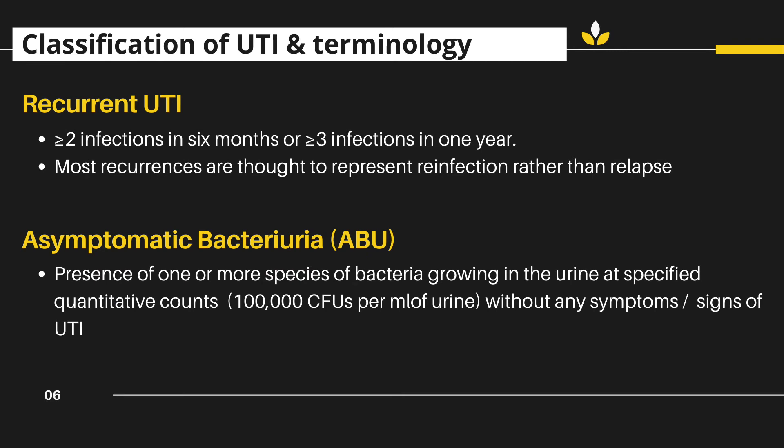Other important terminologies in relation to UTI: recurrent UTI means that the infection of the urinary system has occurred more than or equal to two times in six months, or more than or equal to three infections in one year.